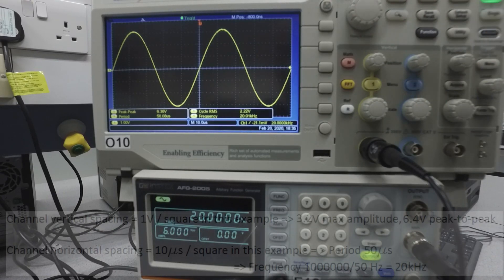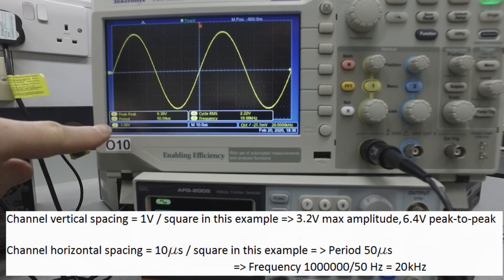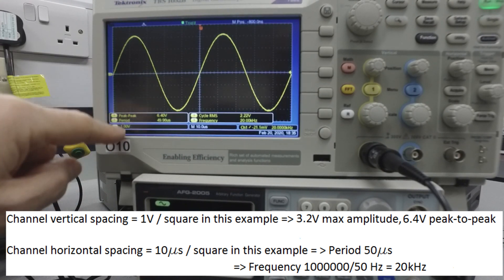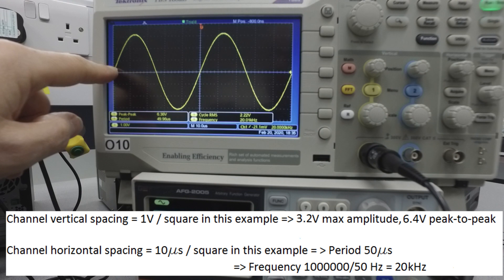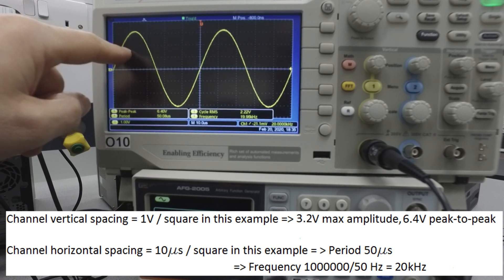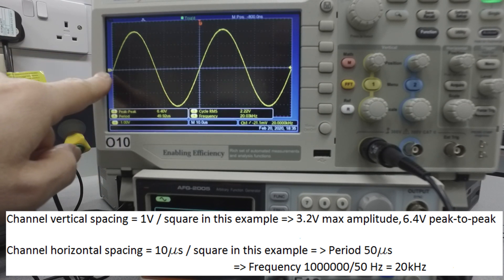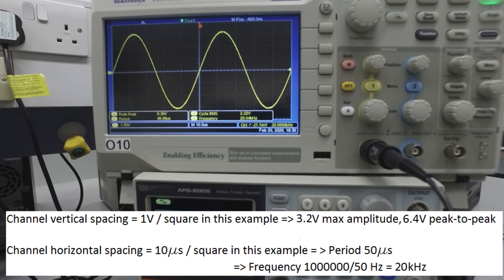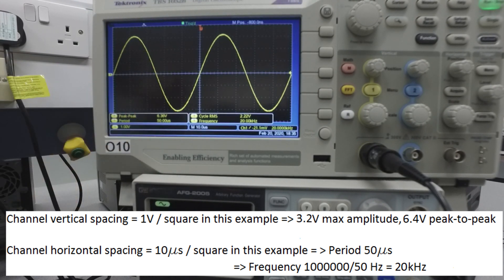This particular oscilloscope gives you some automated readings. But what it does give you at the bottom, here, is the scale for the y-axis. So this tells us that one square of these graticules, one big square there, has a vertical size of one volt. So we can see one, two, three, and a bit volts going up above the zero line, indicated by where that little yellow tag is. And one, two, three, and a bit's coming down. So we've got more than six volts peak-to-peak there. And indeed, there's a preset measurement giving us 6.4 volts peak-to-peak.